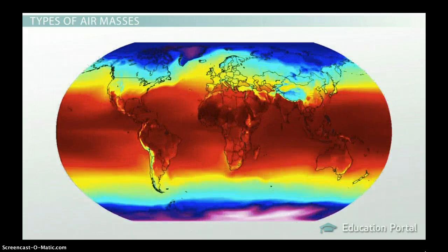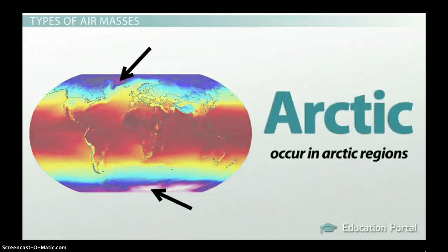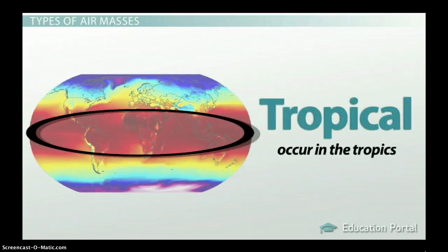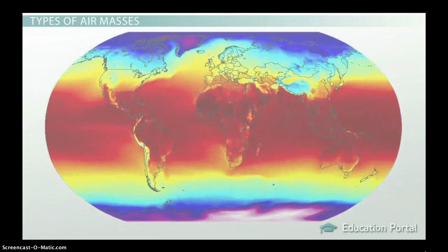The source region of the air mass helps us classify it even further, and for this we have three categories. Arctic air masses occur over Arctic regions like Greenland and Antarctica. Polar air masses occur a little bit farther from the poles, like in Siberia, Canada, and the northern Atlantic and Pacific Oceans. Finally, tropical air masses occur in the tropics, along the equator and over Mexico and the southwest US. These categories are represented by the first letter of the source region, using an uppercase letter.